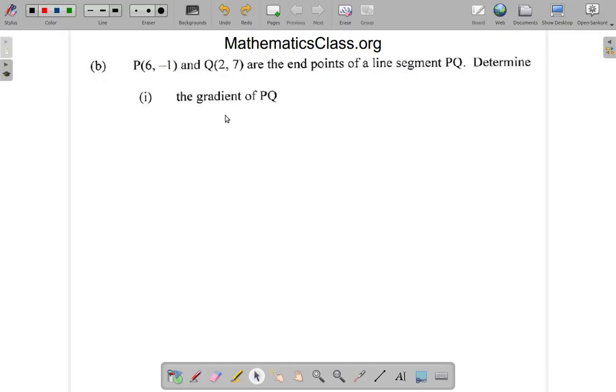You do have a formula that you could use to get the gradient of PQ. The gradient is equal to Y2 minus Y1 over X2 minus X1. What you could do is consider this P as point 1, and consider this as X1, Y1. Q as point 2, consider this as X2, Y2, and substitute them.